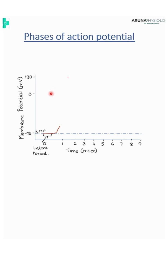Initially there will be a small latent period, and after that there will be an increase in potential from minus 70 to minus 55 millivolt.